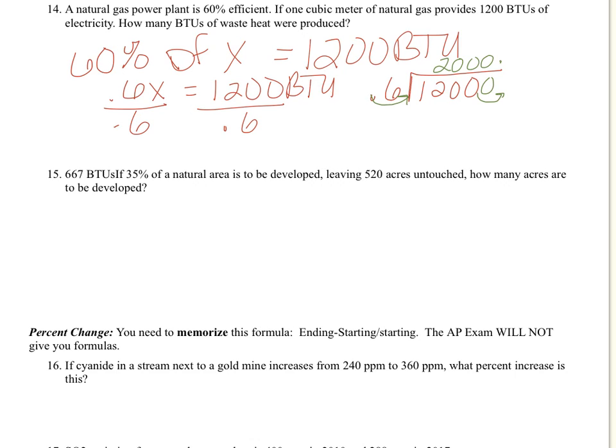So our total that we started with is 2,000 BTUs, but it asks us for waste. So what we need to do is take that 2,000 BTUs minus what we actually got out of the power plant, and that equals 800 BTUs was our waste. So that was the waste amount.